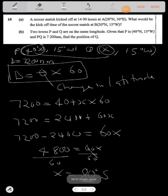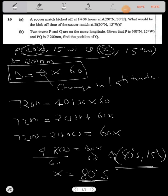Now this is 80 degrees south. You need to indicate the position. So that's the position. So the position for Q becomes 80 degrees south and 15 degrees west. Thank you for watching.